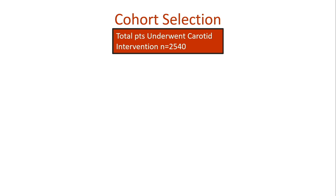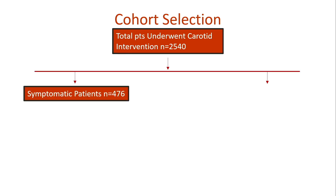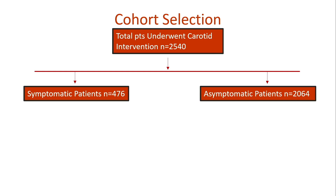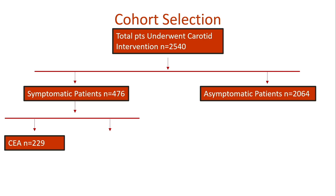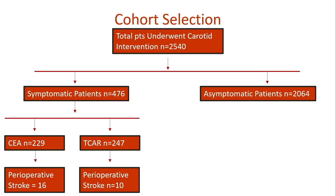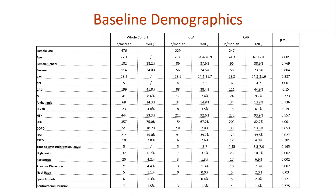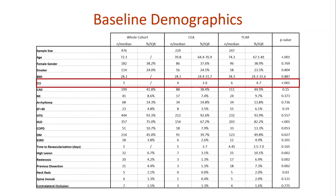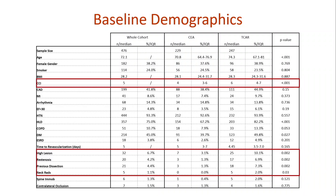Our total cohort included 2,540 patients in our carotid database. Breaking it down: 476 were symptomatic prior to revascularization and 2,064 were excluded as asymptomatic. Of the symptomatic patients, 229 received a CEA and 247 received TCAR. Post-operative 30-day stroke occurred in 16 of the 229 CEA patients and 10 in the TCAR cohort. Looking at baseline demographics — not unexpectedly — those who got TCAR were sicker patients, with a Charlson Comorbidity Index of 6 compared to 4 for CEA.